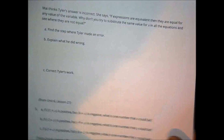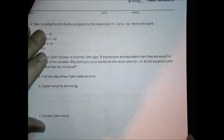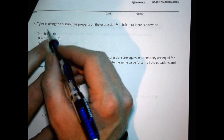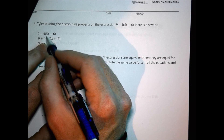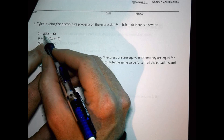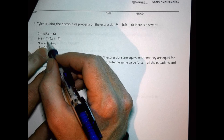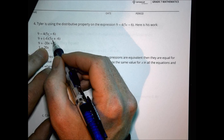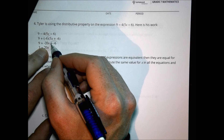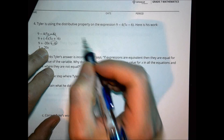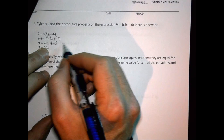Moving on to our last page for the unit. Problem 4: Tyler is using the distributive property on an expression. He starts, turns a subtraction into a negative 4, adds plus and minus signs converting to add-the-opposite form, then brings in the 9 and distributes. But wait — what happened to the 4? The 4 should be distributed over the 6 as well, and it wasn't. That's the problem right there.